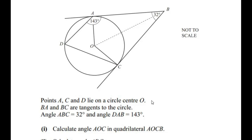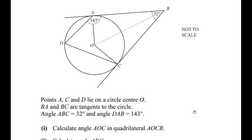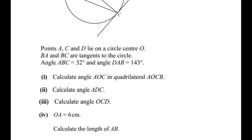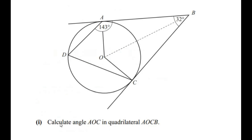Hello and welcome to my channel. In this video we are going to solve an example from circle theorems. Points A, C, and D lie on a circle with center O. BA and BC are the tangents to the circle. Angle ABC is given as 32 degrees and angle DAB is given as 143 degrees. This question has four sub-questions, so let us begin with the first sub-question.